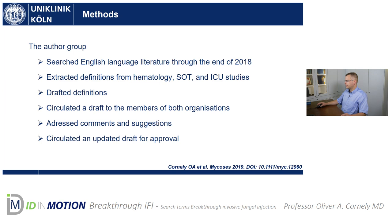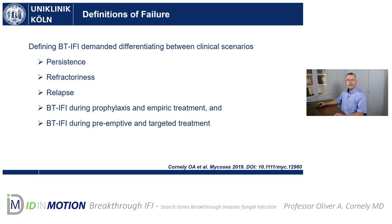There is only one way to be a treatment success, but there are actually five different ways to fail treatment of an invasive fungal infection. When we wanted to define only breakthrough, we had to define all of these clinical settings first. Number one is persistence of fungal infection. Number two is refractoriness of disease. Number three is a relapse. Number four is a breakthrough invasive fungal infection during prophylaxis and empiric treatment. And number five is a breakthrough IFI during preemptive treatment or targeted treatment.